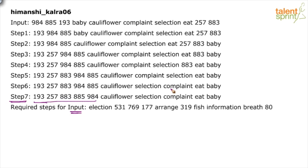The logic here is very interesting. The words have been arranged based on the number of vowels in each word — in descending order of vowel count. For example, look at the word cauliflower.